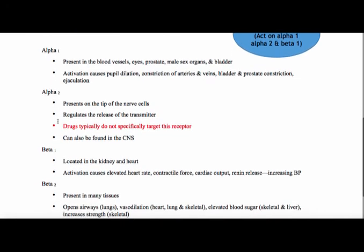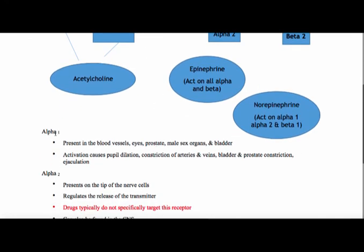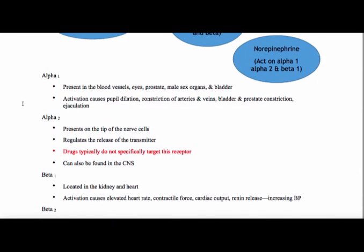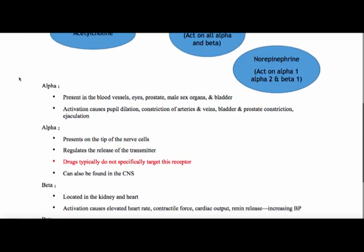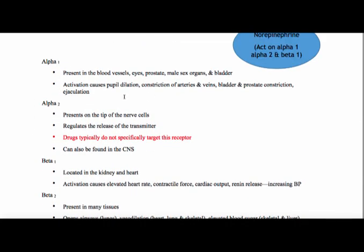Let's look at alpha 1 — what does it do when you turn on alpha 1? Alpha 1 is present in the blood vessels, the eyes, the prostate, the male sex organs, and the bladder. If you hit alpha 1, this will cause pupil dilation, constriction of the arteries and veins, bladder and prostate constriction, and it will affect ejaculation. That's why the alpha blockers will work for BPH.